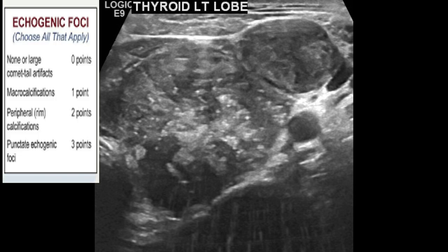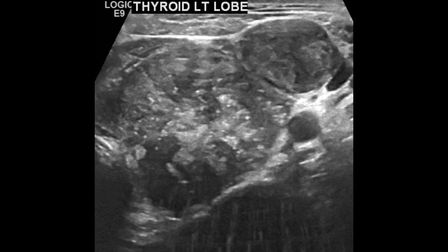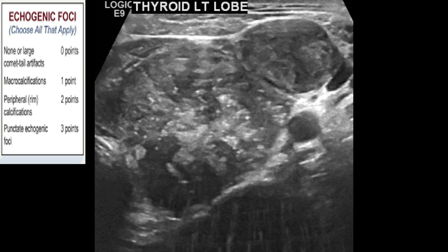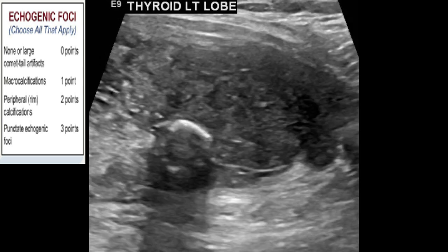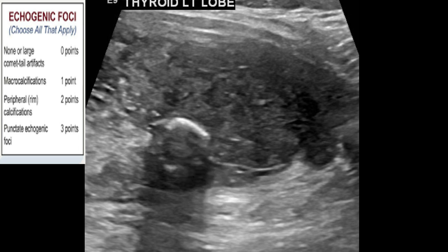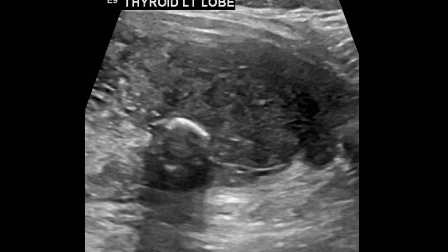The last category is echogenic foci. Always remember that the nodule itself can have two types of echogenic foci. In this case, we have punctate echogenic foci and we will give it three points for that.